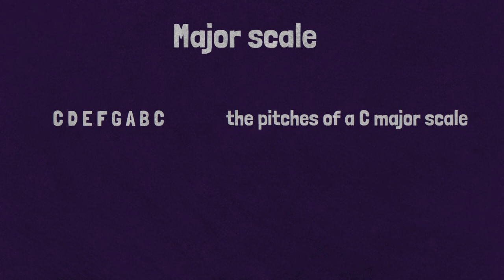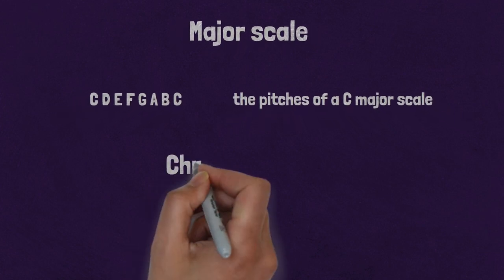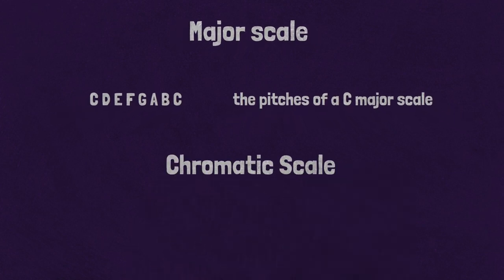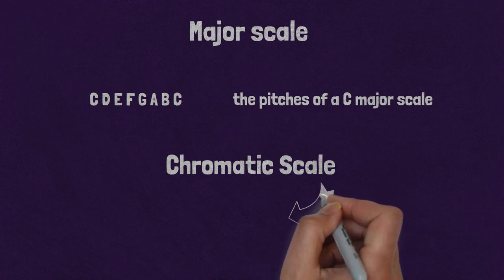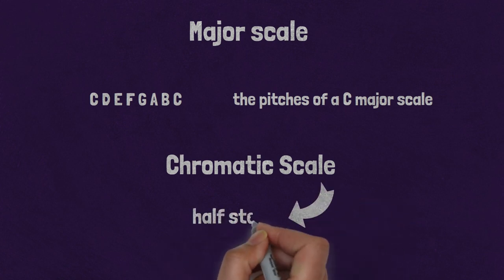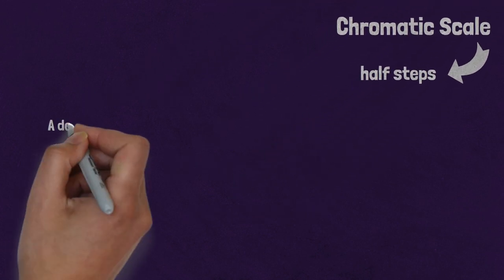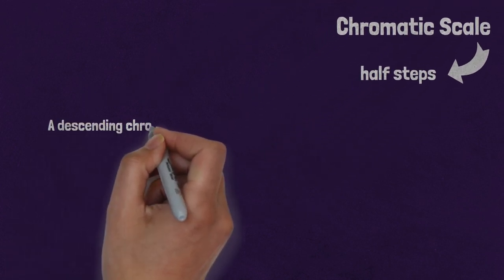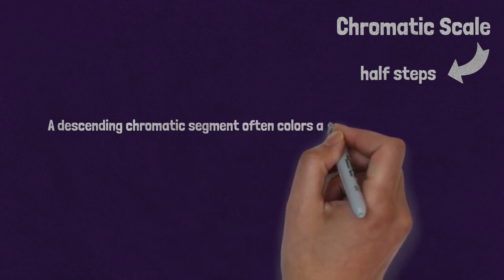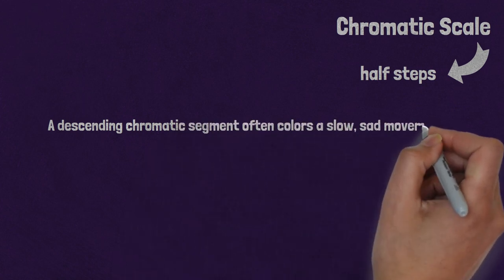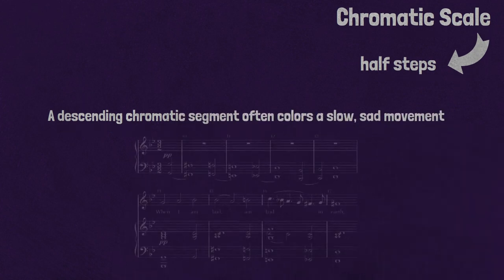Similarly, when the chromatic collection is ordered, it becomes the chromatic scale, made up entirely of consecutive half steps. In musical works, composers may include only a segment of this scale. A descending chromatic segment often colors a slow, sad movement, like Purcell's aria.